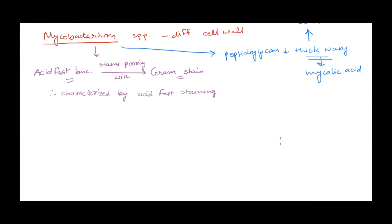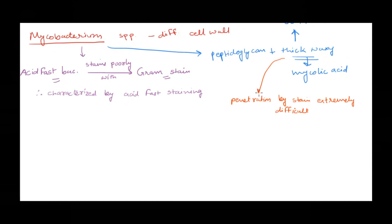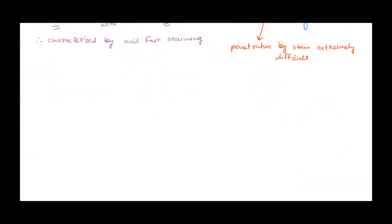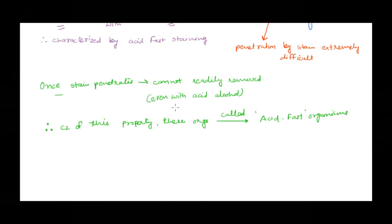Because of this thick waxy layer, it becomes very difficult for a stain to penetrate the cell wall. This makes it very difficult for normal aqueous stains like crystal violet or methylene blue to stain the bacteria. Not only that — if by some means we do stain these bacteria, it is very difficult to decolorize them. Even with acid alcohol it will be difficult to remove the stain, and because of this property these organisms are called acid fast organisms.